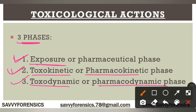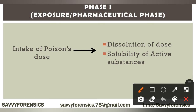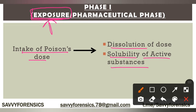So here we will talk about the exposure or pharmaceutical phase. Exposure, as you can clearly understand, is the starting phase. Here we will talk about the exposure of poison — this particular dose involves dissolution and it will start the solubility. If you have a certain substance, it will be soluble. This is the starting phase which we call the exposure phase.